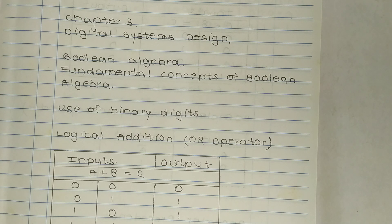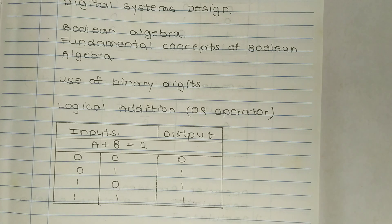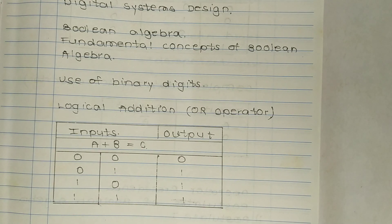Logical addition (OR operator): The symbol plus is used for logical addition or operator. We can define the plus symbol by listing all possible combinations of a and b with the resulting value of c for each combination in the equation a plus b equals c. Since the variables a and b can have only two possible values, 0 and 1,